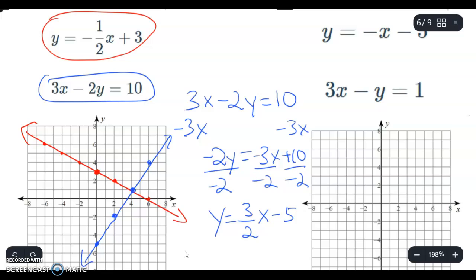And where they cross is my answer right here so that point is 4, positive 1, so that's the answer.